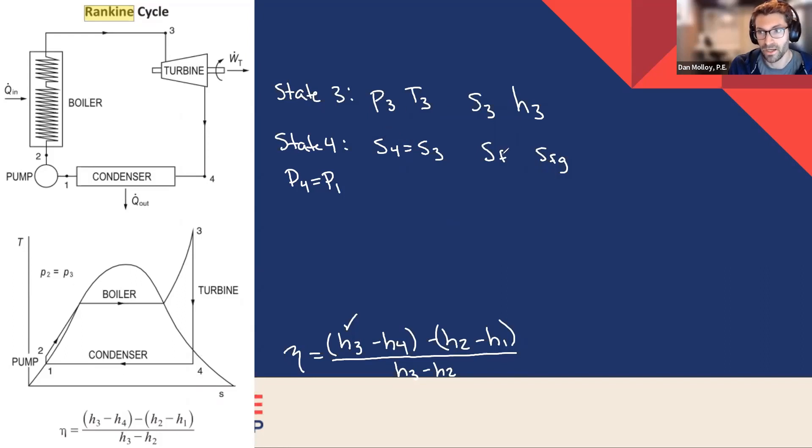So we know the pressure at state four, and we know the entropy at state four. And now we can look up in the saturated steam table the values for SF and SFG, and we can find the quality at state four is going to be S4 minus SF over SFG. Once we know the quality at state four, we can use the very same line in the table to find HF and HFG and apply that quality that was determined using the entropies to find the enthalpy at state four.